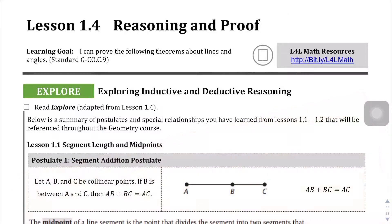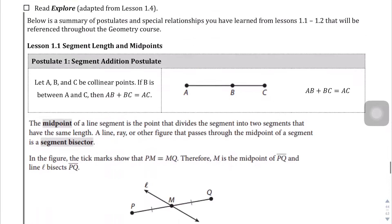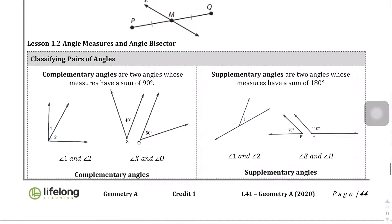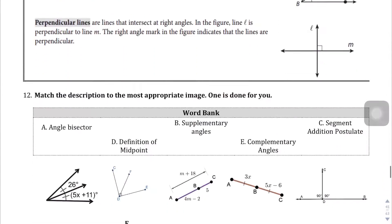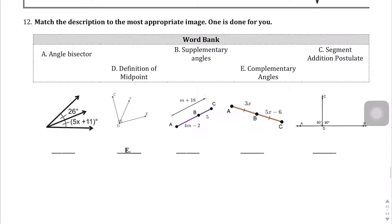Welcome to Lesson 1.4 on page 44. We're going to be talking about reasoning and proof, and proofs are a big part of geometry, fortunately or unfortunately, depending on how you look at it. I'm going to let you go through the Explorer section and read all the postulates and classifications of angles, but we're going to head to page 45.